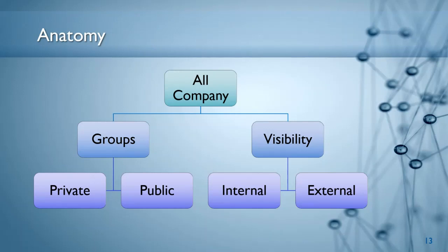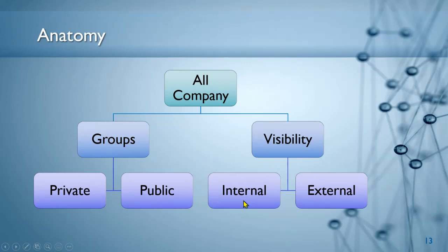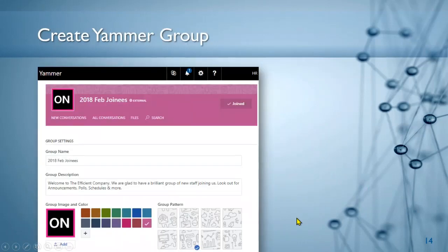For example, 'Health' or 'CSR' could be open-ended public groups within the company. From a visibility point of view, once you're part of a group you have access to it. Any internal employee can be a member, but you can also add external people. So when you create a group, it can be a mix of internal and external people. Creating a group is very simple — go to Yammer, create a group, give it a name, put a logo, choose a color pattern, and that's it.